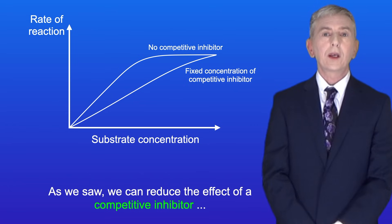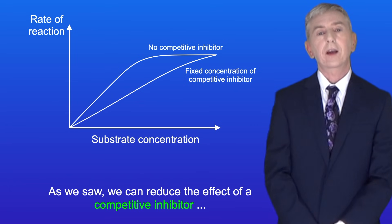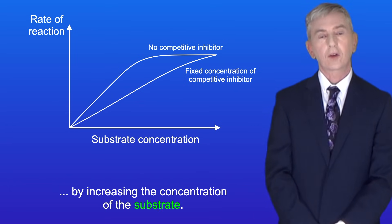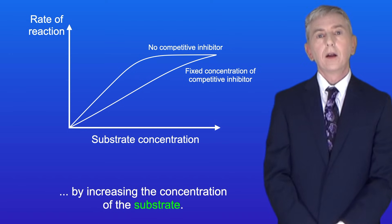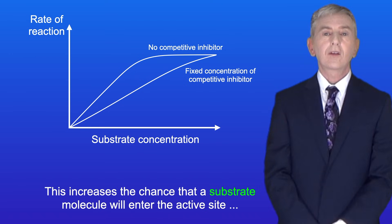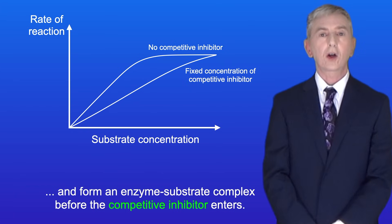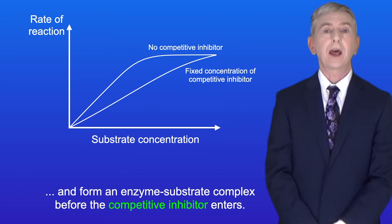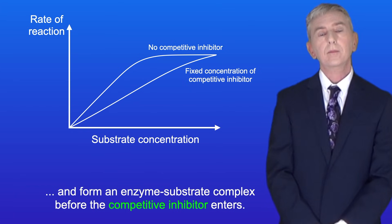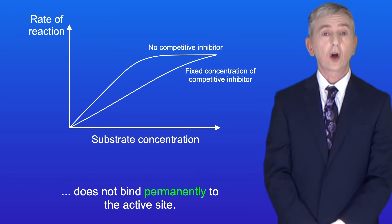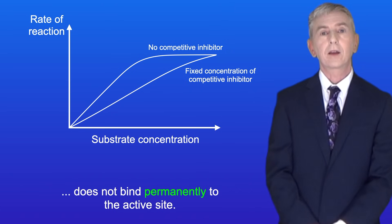We can reduce the effect of a competitive inhibitor by increasing the concentration of the substrate. This increases the chance that a substrate molecule will enter the active site and form an enzyme substrate complex before the competitive inhibitor enters. But remember that this only applies if the competitive inhibitor does not bind permanently to the active site.